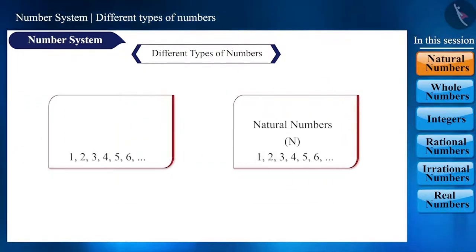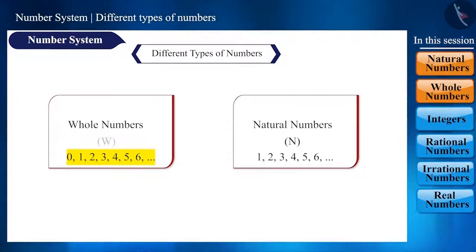Now, if we add the number 0, this series will be called whole numbers which are 0, 1, 2, 3, 4, 5, 6, etc. These are indicated by the symbol w.